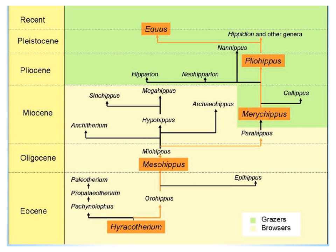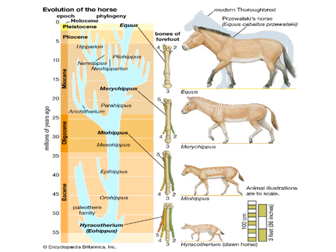In this picture we see that in the Eocene period, Hyracotherium was the most primitive grazer or browser animal, from which emerged different other forms — then Mesohippus, Merychippus, Pliohippus, and then the modern Equus horse. This is the linear lineage of the evolution of the horse starting from Hyracotherium, Mesohippus, Merychippus, Pliohippus, and then the modern Equus.